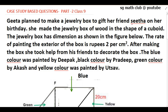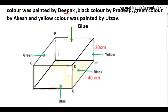The question goes like this: Gita planned to make a jewelry box to gift her friend Sita on her birthday. She made the jewelry box of wood in the shape of a cupboard. The jewelry box has dimensions as shown in the figure. The rate of painting the exterior of the box is rupees 2 per centimeter square. After making the box, she took help from her friends to decorate it. The blue color was painted by Deepak, black color by Pradip, green color by Akash, and yellow color was painted by Utsa. You can see the box and the dimensions given here.